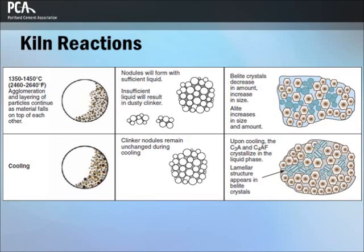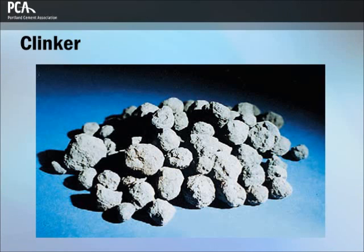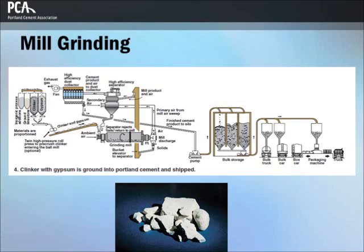Upon cooling, the final product from the kiln, called clinker, is rapidly cooled and then pulverized into a fine material in the final stage of cement manufacturing. During this operation, small amounts of gypsum are added, mostly to regulate the setting time of the cement. Limestone and inorganic processing additions may also be added, each in amounts up to 5% by mass.